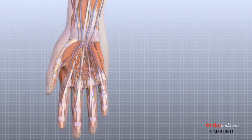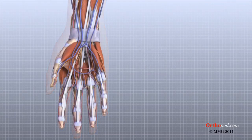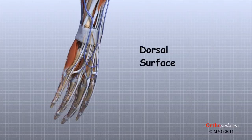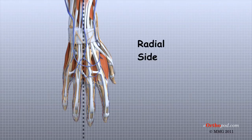Let's define some common anatomic terms as they relate to the hand. This will make it clearer as we talk about the structures of the hand later. The front or palm side of the hand is referred to as the palmar side. The back of the hand is called the dorsal side. The half of the hand from the middle finger to the thumb is called the radial side, and the other half is called the ulnar side.